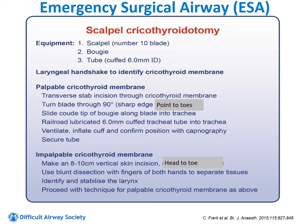For equipment, we need a scalpel, a bougie, and an endotracheal tube. These have been conveniently assembled in something called the stab bag, clearly labeled Plan D in the bottom drawer. If you can palpate the cricothyroid membrane, perform the laryngeal handshake, stabilize the larynx, make the transverse stab incision, rotate the scalpel 90 degrees, rock the blade back to open the incision, insert the bougie, remove the scalpel, and railroad the size 6.0 endotracheal tube. Confirm placement with capnography and auscultation.